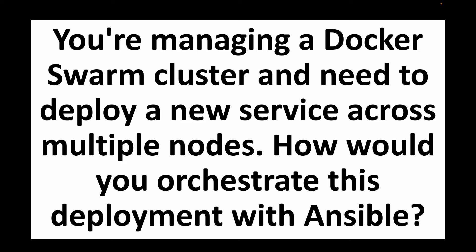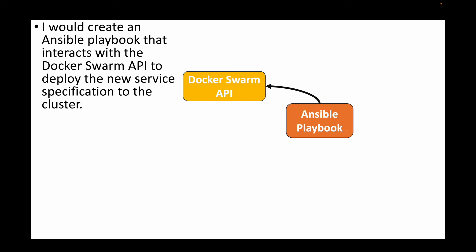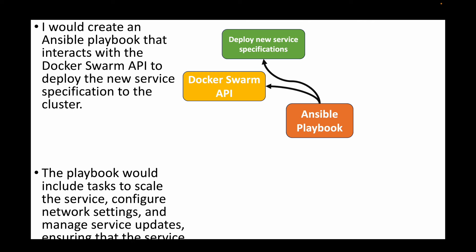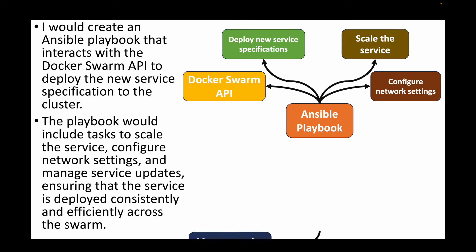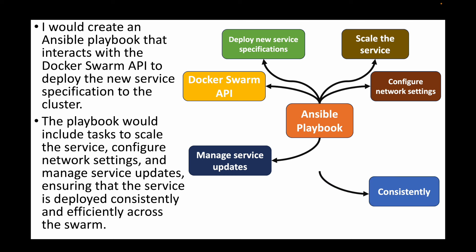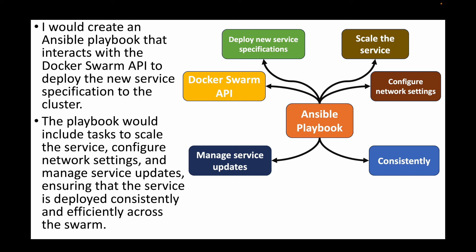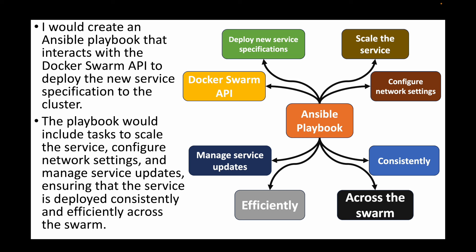The next question: you're managing a Docker Swarm cluster and need to deploy a new service across multiple nodes — how would you orchestrate this with Ansible? We write an Ansible playbook that interacts with the Docker Swarm API to deploy new service specifications to the cluster. The playbook includes tasks to scale the service, configure network settings, and manage service updates, ensuring consistent and efficient deployment across the swarm.